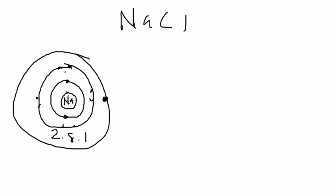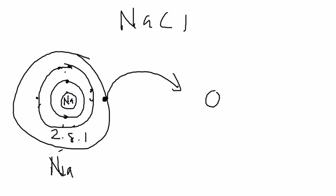What happens is sodium will actually give up one electron to a non-metal — this is sodium — to a non-metal chlorine atom. For sodium we use dots, so for the chlorine atom you have to use crosses. Chlorine atom's electron structure is 2.8.7.